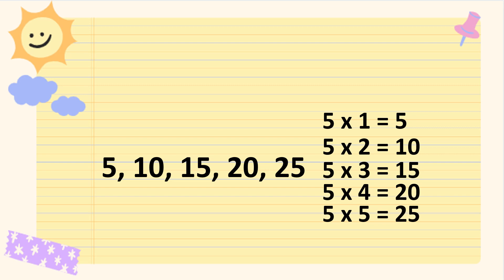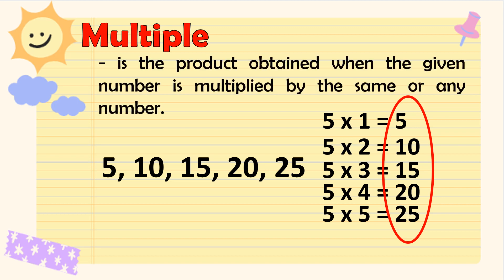Kung inyong mapapansin, ang sagot dito na minultiply natin yung mga numbers by 5 ay kaparehas ng nasa pattern. Ngayon, ano ang tawag natin dito? Tama! Ang tawag natin dito sa 5, 10, 15, 20, at 25 ay product, kasi ito yung sagot nang minultiply natin ang mga numbers. Ngayon, pwede din natin itong tawagin multiple or multiples.